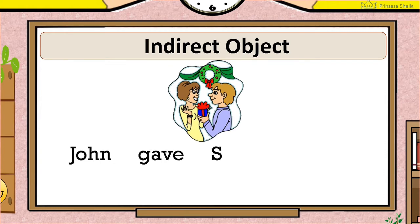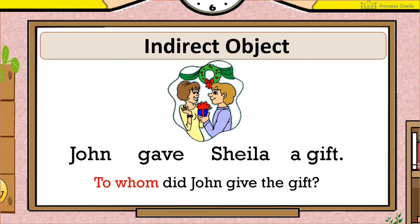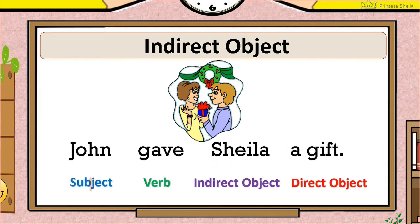Another example. John gave Sheila a gift. To whom did John give the gift? To Sheila. Sheila is the person being given to. So Sheila is the indirect object.